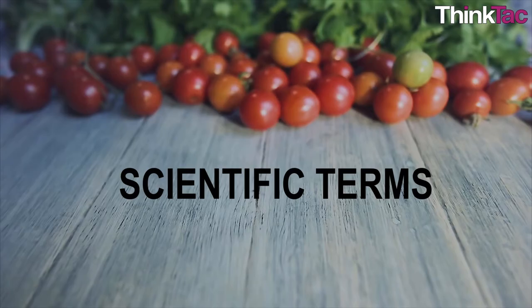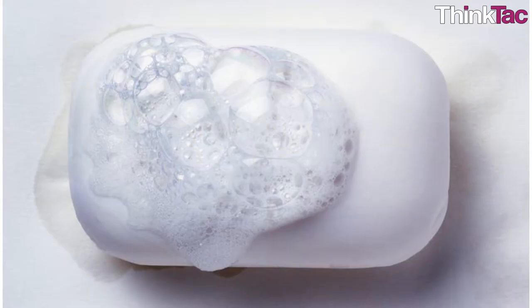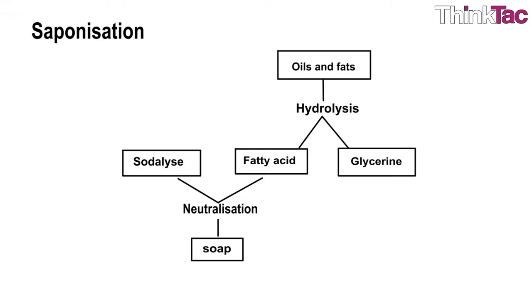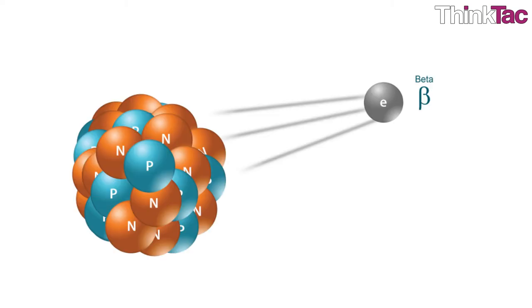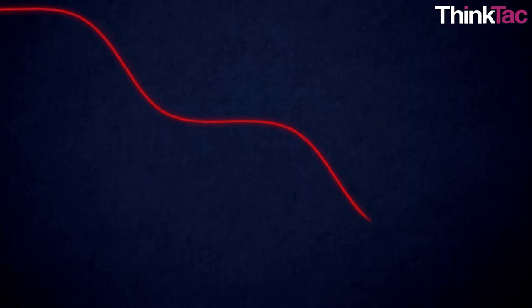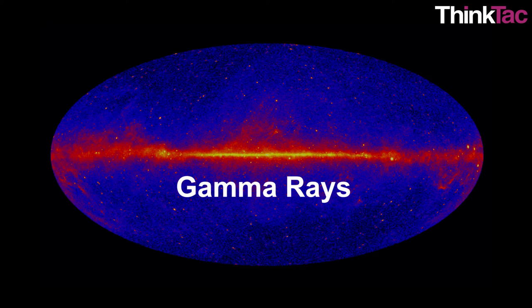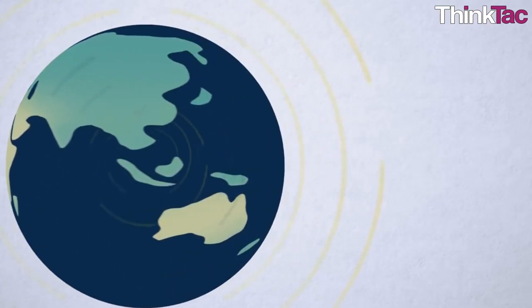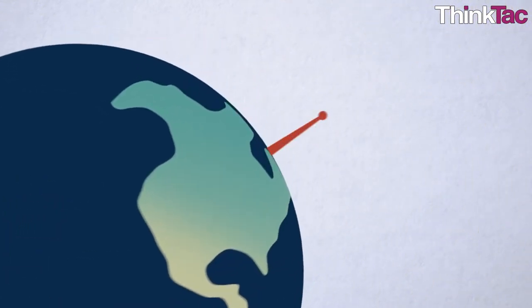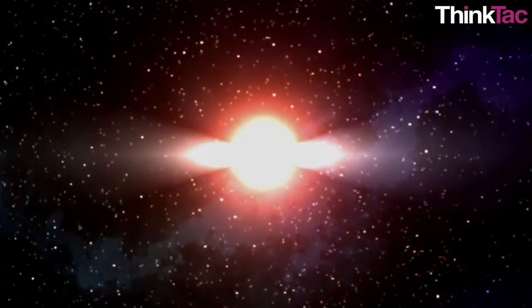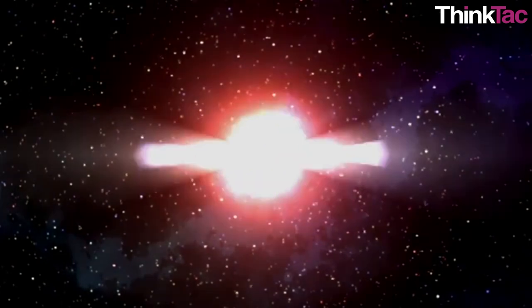Here are some scientific terms. Saponize: in simple terms it means converting fats into soaps, but scientifically it means to hydrolyze a fat with alkali to form soap and glycerol. Beta rays: beta particles are high-energy, high-speed electrons or positrons emitted by certain fission fragments or by certain primordial radioactive nuclei such as potassium-40. Gamma rays: these are the most penetrating and energetic form of electromagnetic radiation, arising from the radioactive decay of atomic nuclei. They are even stronger than x-rays.